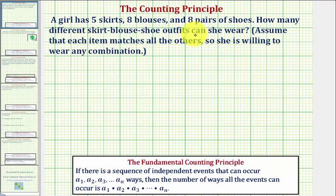We can determine the total number of outfits by using the fundamental counting principle, which tells us if there's a sequence of independent events that can occur a sub one, a sub two, a sub three, and so on, the number of ways all the events can occur is equal to the product of the number of ways each event can occur.